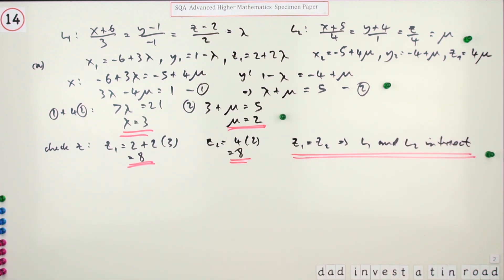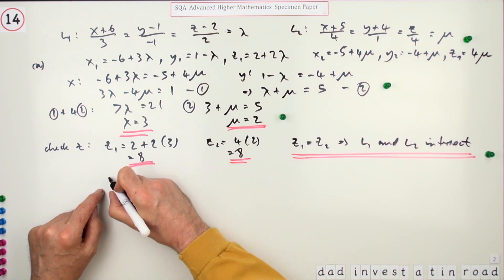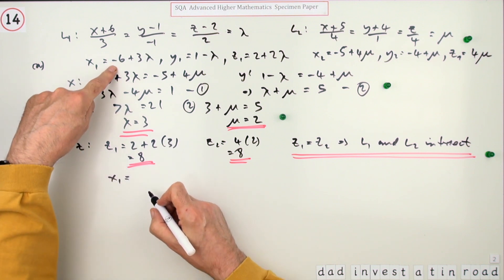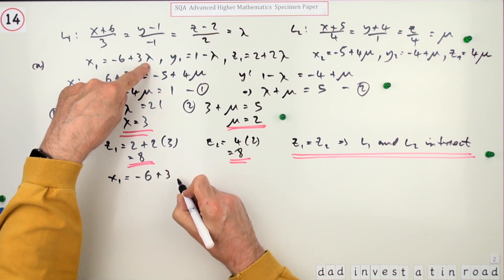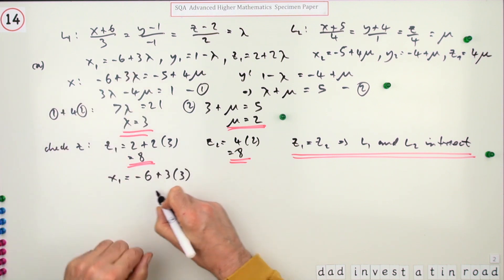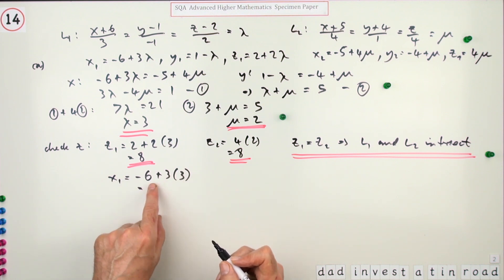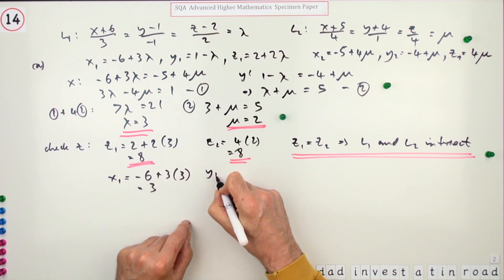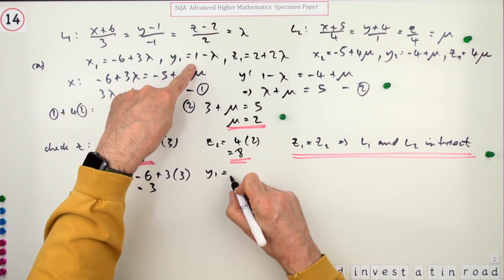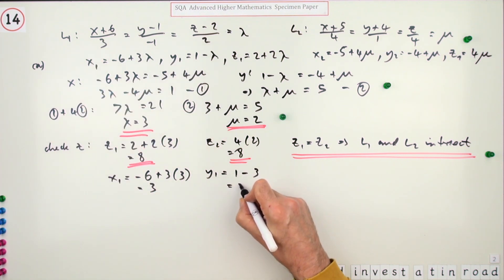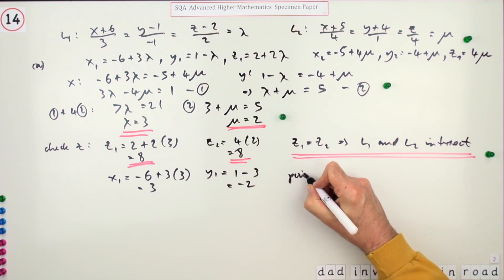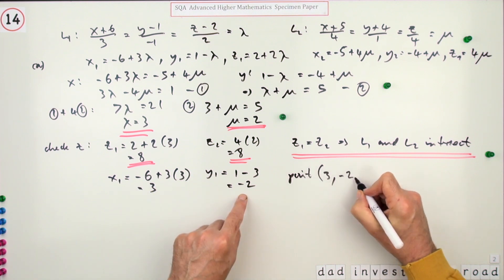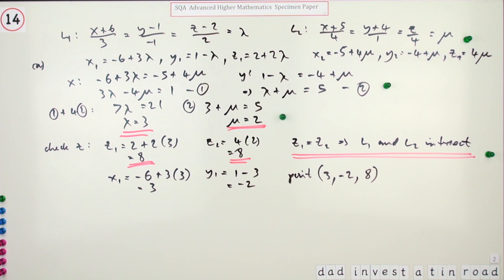Verifying z-coordinates match gets you a mark. For the final mark, find the actual coordinates. Using x1: negative six plus three times three equals three. y1 is one minus three which is negative two. z is already eight. So the point of intersection is (3, -2, 8). That's the fifth mark.